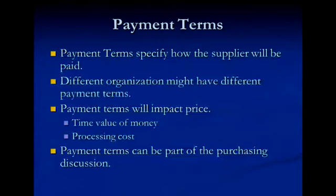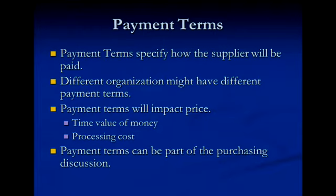Another important issue is payment terms. Your supplier has to know how they're going to be paid to give you an accurate price. Different organizations have different payment terms — one may pay 30 days from invoice, another 30 days net from the first day of the month, another 60 days. Typically the more prompt you are in payment, you'll get a slightly better price. Payment terms impact price due to the time value of money and processing cost. If you are a difficult company to work with, your suppliers will charge you a premium.